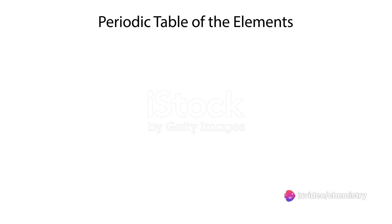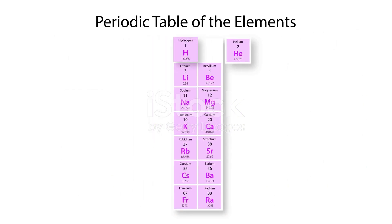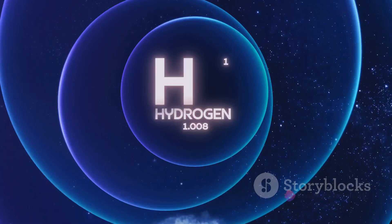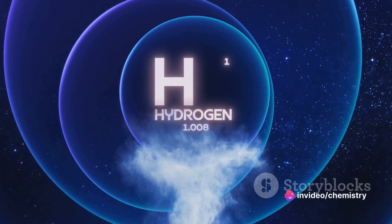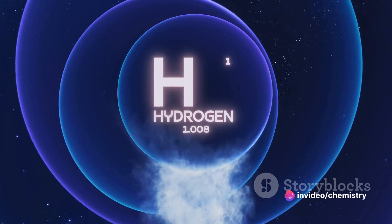The first step is understanding the symbols. Each element is represented by a unique symbol, usually the first one or two letters of its name in the periodic table. For example, H represents hydrogen, O represents oxygen, N represents nitrogen, and so on.